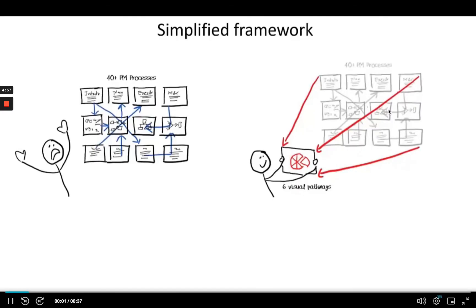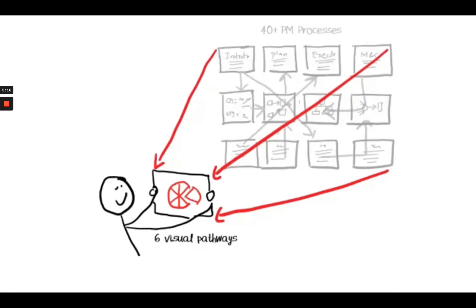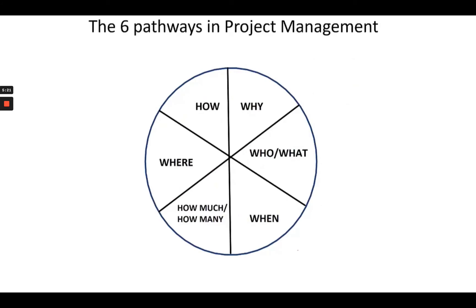Let's now quickly talk about how this course is going to be structured. The backbone of this course is the idea that we can see project management in the same way as we see the real world — that is, the six visual pathways which we are so comfortable with. This course attempts to map the major concepts of project management through the six simple visual pathways to make this course true to its title — the simplest guide to project management.